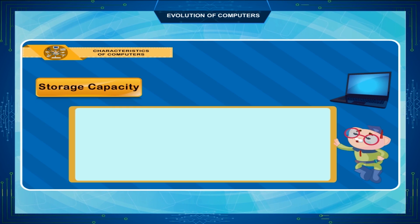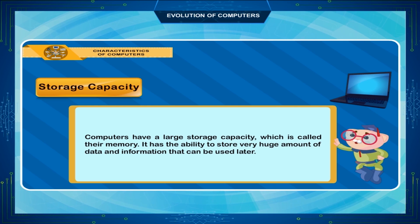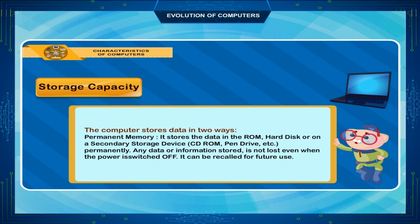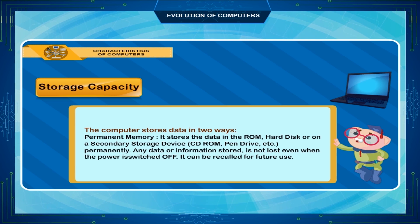Storage Capacity: Computers have a large storage capacity called memory. They can store a very large amount of data and information that can be used later. The computer stores data in two ways. Temporary memory, or RAM, stores data only while the computer is on — all data is lost once the computer is switched off. Permanent memory stores data in ROM, on a hard disk, or on secondary storage devices such as a CD-ROM or pen drive, permanently. Any data stored is not lost even when the power is switched off and can be recalled for future use.